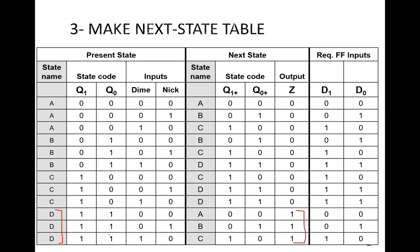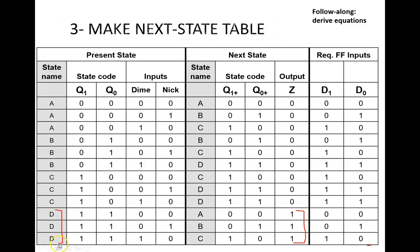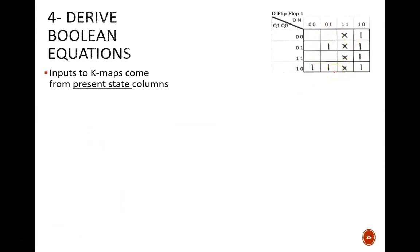Now, with the table complete, pause the video and try to derive the Boolean equations for D1, D0, and Z. Here is my K-map for D1. Recall that these inputs come from the present state columns. Also, note this column of X's. That 1-1 column represents cases where both a dime and nickel are deposited. We assumed that this was impossible, so these will be don't-care conditions. A useful check for the K-map is to realize that our next state table has 12 rows, but the K-map has 16 squares. This means 4 squares must be don't-care conditions. These same 4 squares will be X's on every K-map in this design. For this K-map, we obtain this equation for D1.